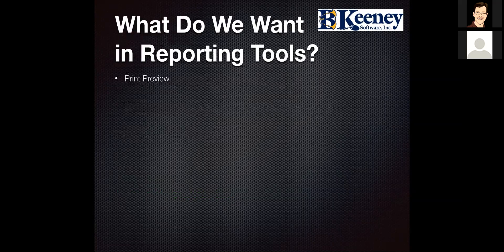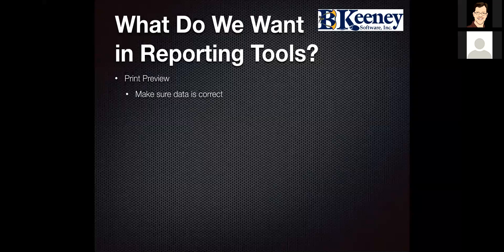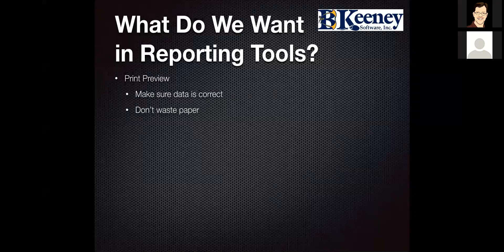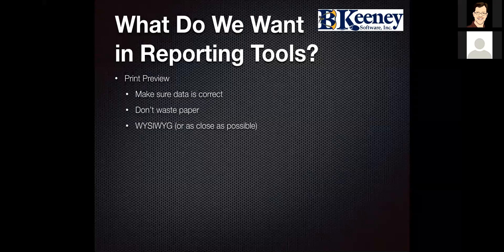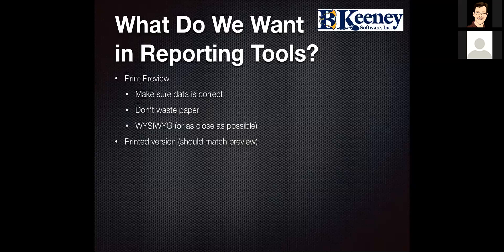Let's start with what we want in reporting tools. For most modern applications, the thing we want most is print preview. We do this to make sure the data is correct — there's nothing worse than trying to print a report that's a thousand pages long only to realize you picked the wrong data, wrong year, wrong whatever. So we don't want to waste paper. What you see is what you get, or as close as possible, is what we want to see. The final format of the report is what we want on screen, and the printed version should match the preview as much as possible. They're not always identical because your screen is 72 or 96 DPI and your printers today are much, much higher, so sometimes there are translation issues.